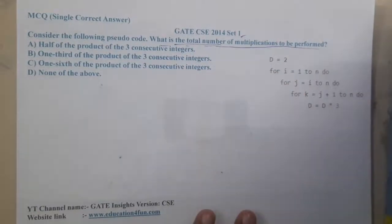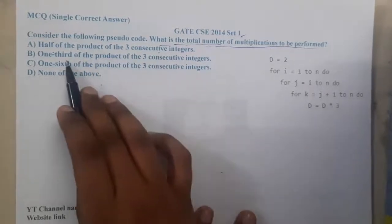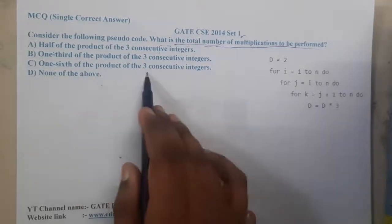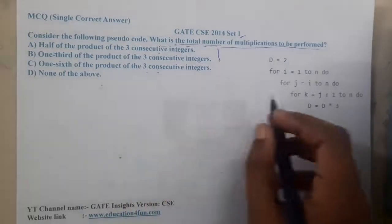The question is what is the total number of multiplications to be performed. Let us go through options, but the options seem to be not numbers - half of the product of three consecutive numbers, one-third of the three consecutive numbers, one-sixth of the three consecutive numbers. So it's in terms of three consecutive numbers.